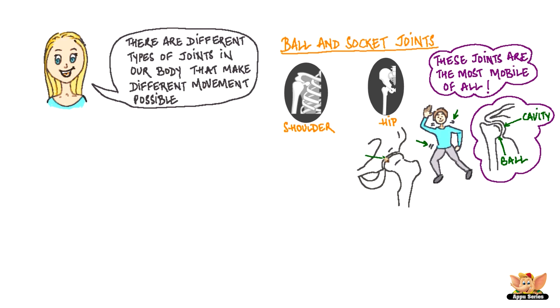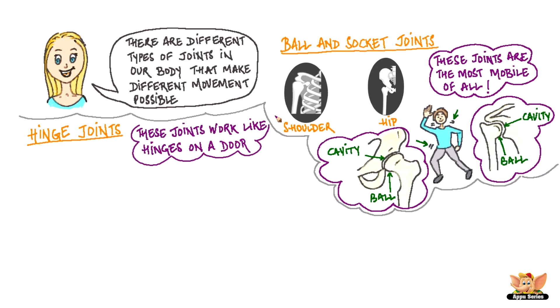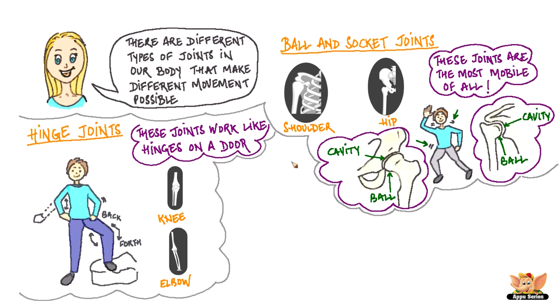Similarly, the hip bone provides the socket or the cavity while the long leg bone is shaped like a ball. The hinge joints work like the hinges on a door — have you seen a door open and close and observed the hinges closely? They allow the bones to move back and forth. The knee and the elbow have hinge joints.